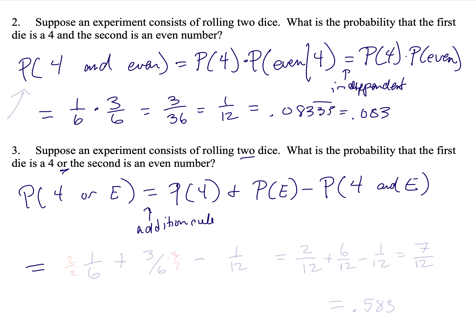The probability the first die is a four is one out of six. The probability the second die is an even number is three out of six. Minus the probability that both are true — which we actually calculated above as one-twelfth. To get a common denominator, we multiply the first two fractions by two over two, giving us two out of 12 plus six out of 12 minus one out of 12, which equals seven-twelfths, or 0.583 repeating, which we could round to 0.583.